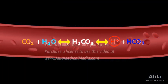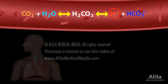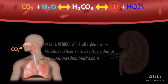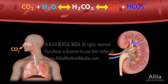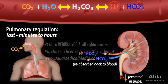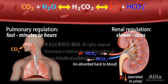The body keeps the blood pH within the normal range by two mechanisms: removal of carbon dioxide through exhalation by the lungs, and excretion of acids and reabsorption of bicarbonate through the kidneys. Pulmonary regulation is fast, acting within minutes to hours. Renal regulation is slower, taking days to respond to pH changes.